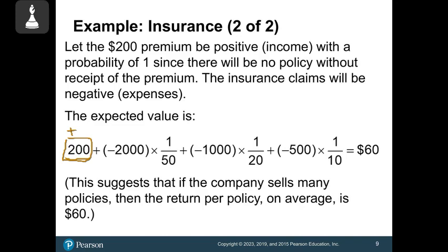Out money is negative $2,000. So negative $2,000 times its probability, 1 out of 50. The company will have to pay out $1,000 about 1 out of 20 times. So paying out money is negative money for them. And then they pay out $500 or negative $500 about 1 out of 10 times. If you calculate this entire value, the net result is $60 for every single patron that they have or policyholder that they have, they're going to bank $60. This suggests that the company sells many policies, the average return on policies is $60.